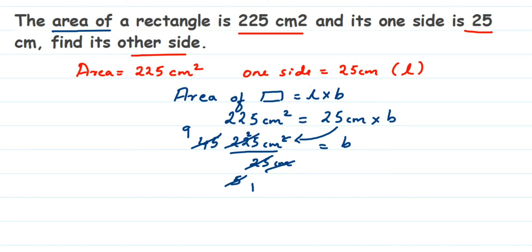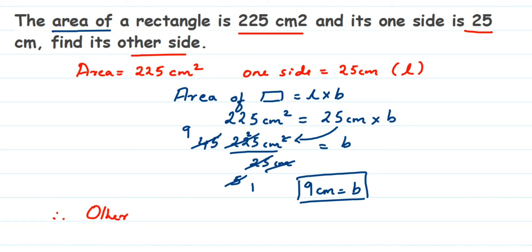So breadth B equals 9 centimeter. Therefore, the other side is equal to 9 centimeter. I hope this question is clear. If you have any questions or doubts, you can drop a comment. Thank you so much for watching.